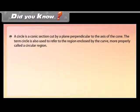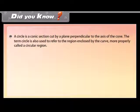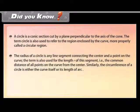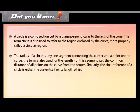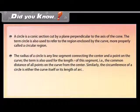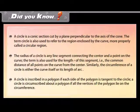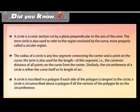A circle is a conic section cut by a plane perpendicular to the axis of the cone. The term circle also refers to the region enclosed by the curve, more properly called a circular region. The radius is any line segment connecting the center to a point on the curve. The circumference is either the curve itself or its length. A circle is inscribed in a polygon if each side is tangent to the circle, and circumscribed about a polygon if all vertices lie on the circumference.